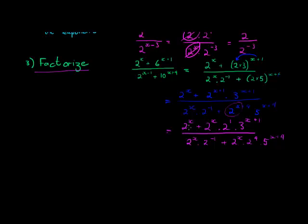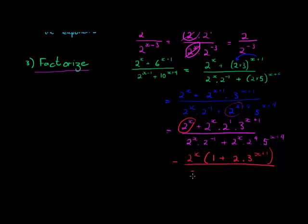Now the factorize step comes in. I take out 2 to the power of x as a common factor from the numerator, leaving 2 to the power of x times the quantity 2 times 3 to the power of x plus 1, plus 1. In the denominator I also take out 2 to the power of x, leaving a half plus 16 times 5 to the power of x plus 4.